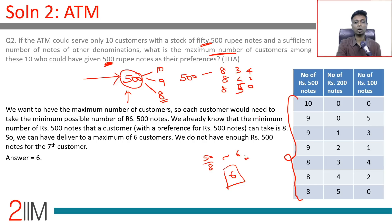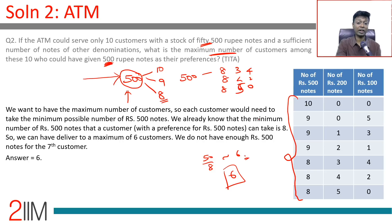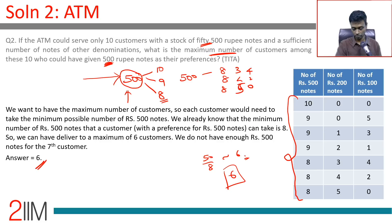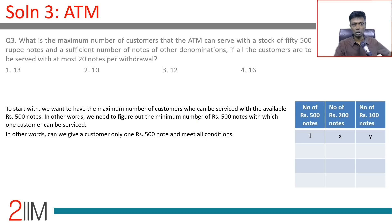Whenever a customer gives 500 as their preferred denomination, we give them 8 notes of 500 rupee. Using 55 available 500 rupee notes, 8 × 6 = 48, serving 6 customers. There are not enough 500 rupee notes for a 7th customer with this preference. So the maximum number of customers with 500 rupee note as preference is 6.